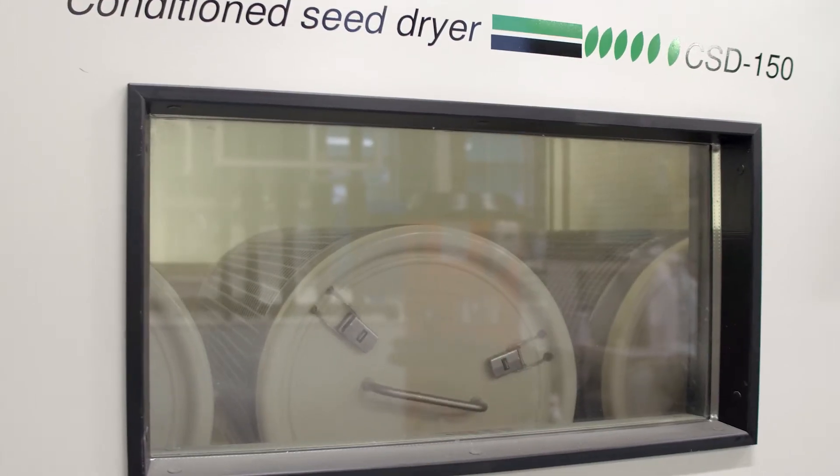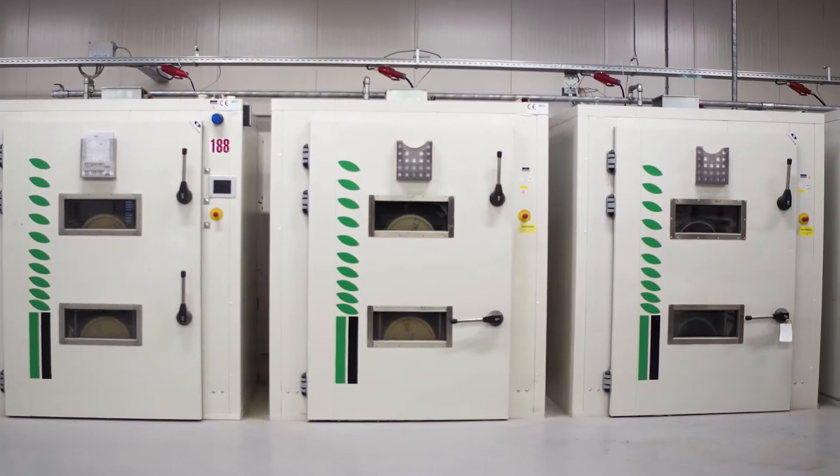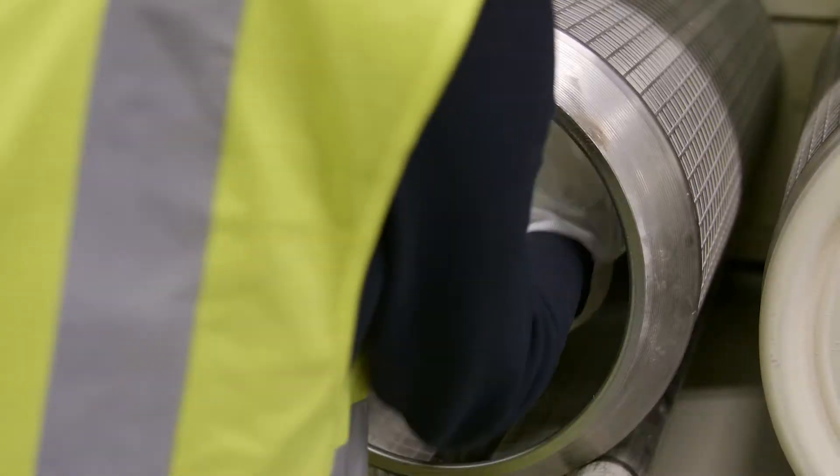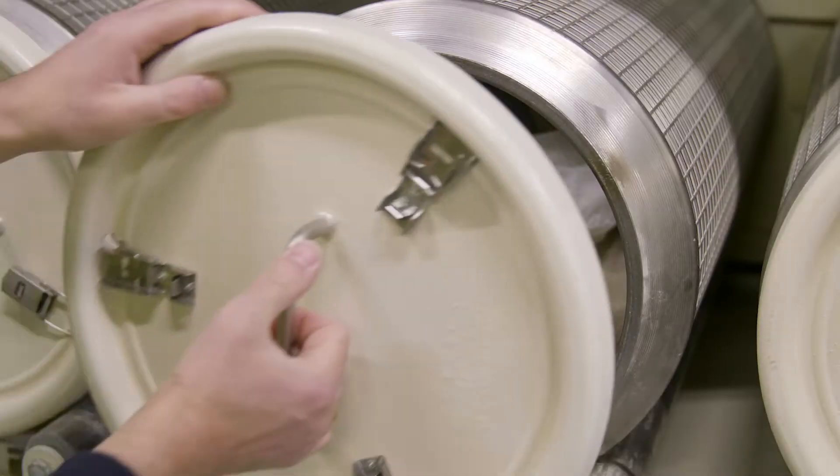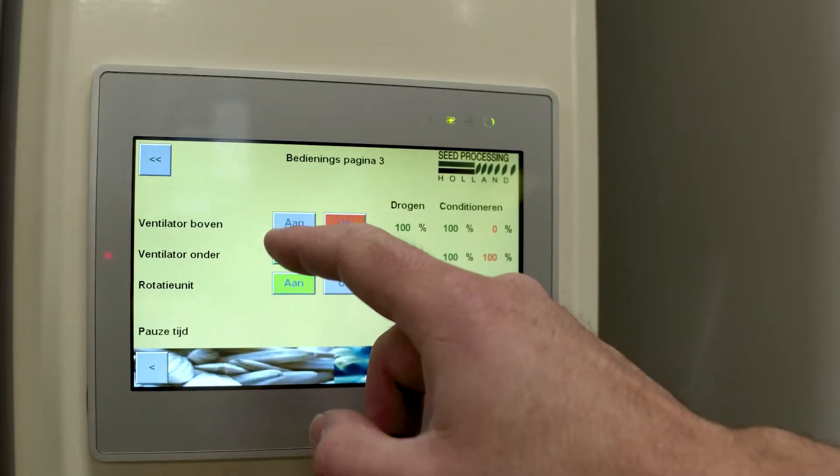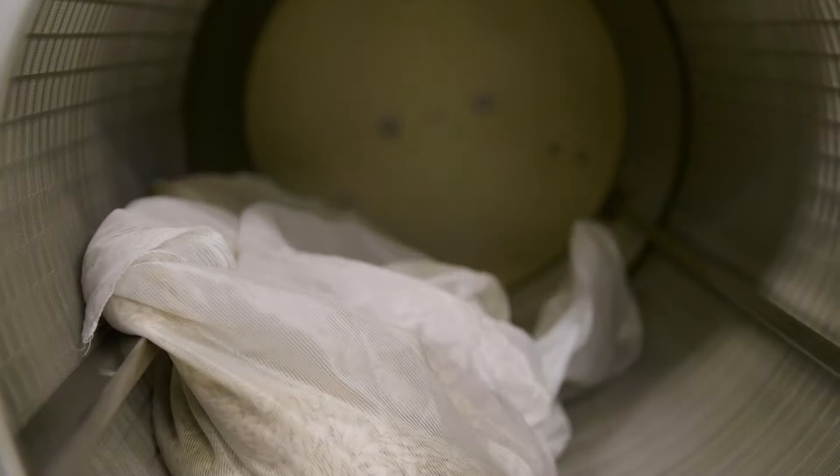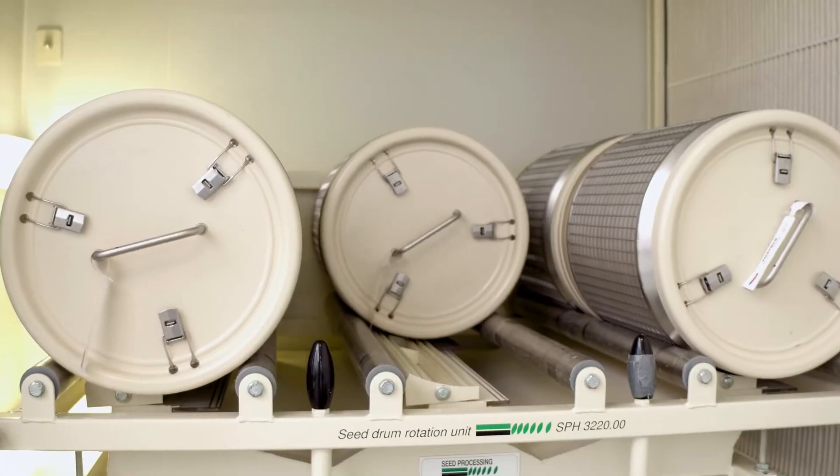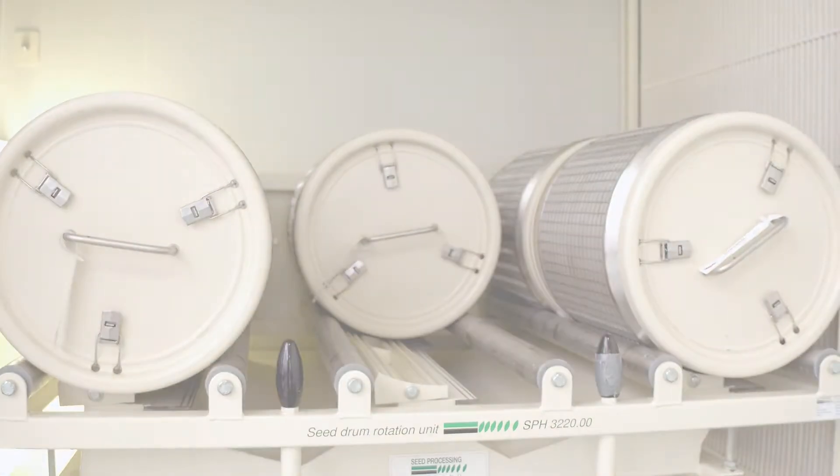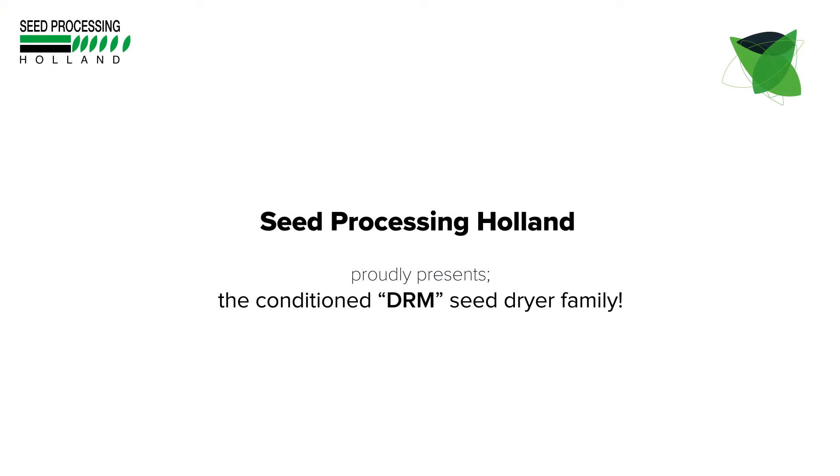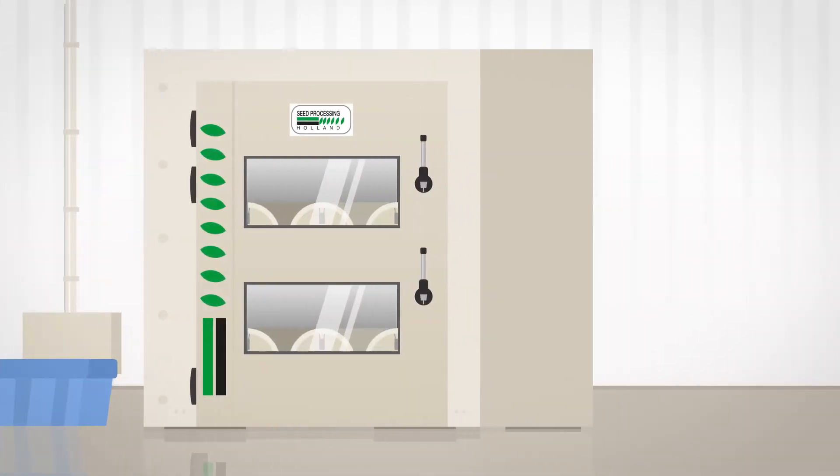After seed extraction, disinfecting, priming, or other wet processes, the drying of your valuable seeds can start. If you want to maintain the seed viability, it is essential to use the innovative new DRM seed drying technology.